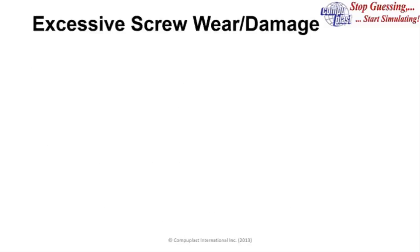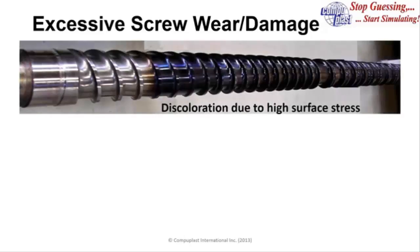So, the first example I wanted to start off with was excessive screw wear and damage. And sometimes when the processors pull a screw, they'll find discoloration on the surface. We originally thought that this might be due to excessive temperature, but it needs about 1,000 degrees to turn chrome steel blue. So, this discoloration, we later determined, was due to high surface stress. And this is a screw from a groove feed extruder. And you can see here right at the end of the grooves, the high pressure that's generated creates a very obvious discoloration in the screw surface.